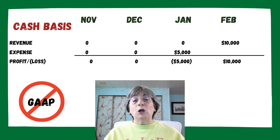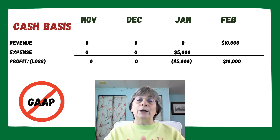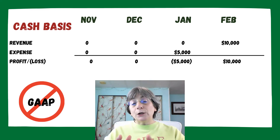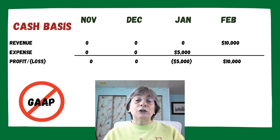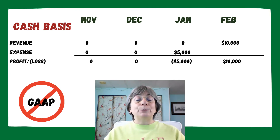Let's look at what our profit and loss — our income statement — would look like under cash basis accounting. For November, we did not take in any money and did not pay out any money, so we have zero revenue, zero expenses, and zero net profit. In December it's the same thing — zero profit. Then in January, when we actually pay the bill for the merchandise, we have an expense of $5,000 with no revenue to match it, so we have a loss of $5,000. And then in February, when we receive the cash from the customer, we recognize $10,000 in revenue with no expenses — so it looks like our profit for that month is $10,000.